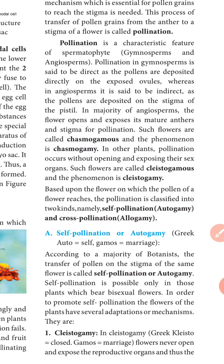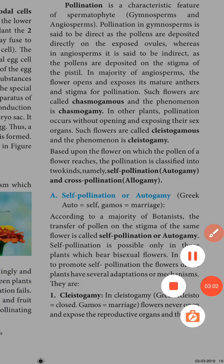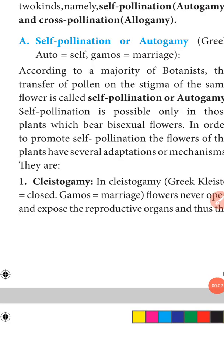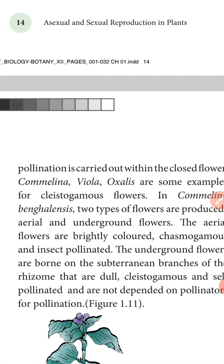To promote self-pollination, flowers have several adaptation mechanisms. First is cleistogamy — the flower never opens and does not expose the reproductive organs, so pollination is carried out within the closed flowers. For example, Commelina benghalensis, Viola, and Oxalis contain cleistogamous flowers.